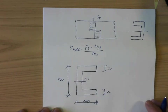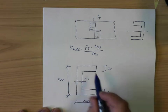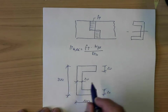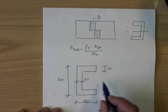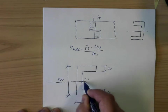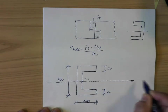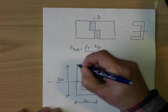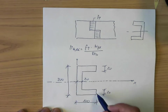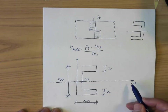Now we have the dimensions. To calculate the plastic section modulus, we have to divide this object into two equal parts about the axis of interest. The axis of interest is this horizontal axis — that is the axis that divides the cross section into two equal parts. This area and this area should be the same. That's the first step.